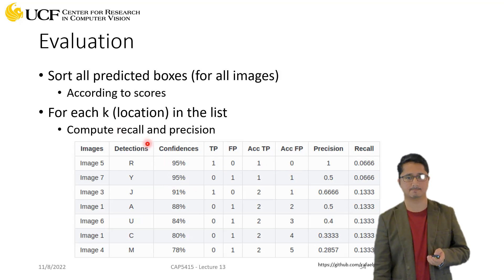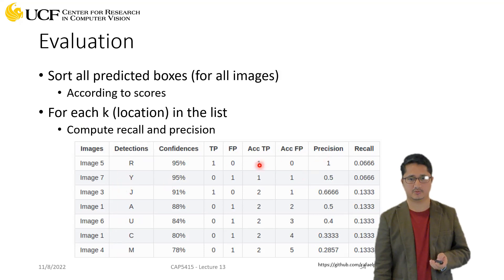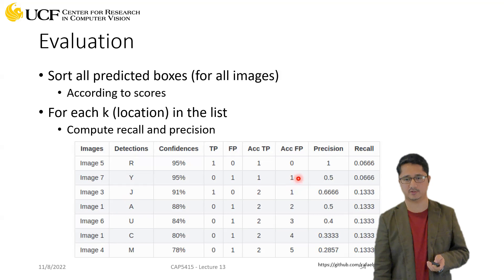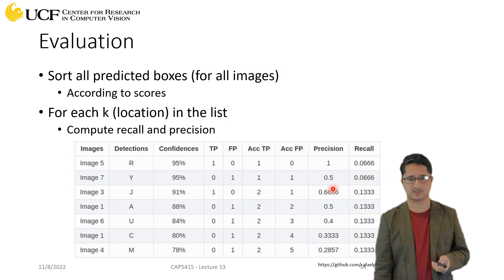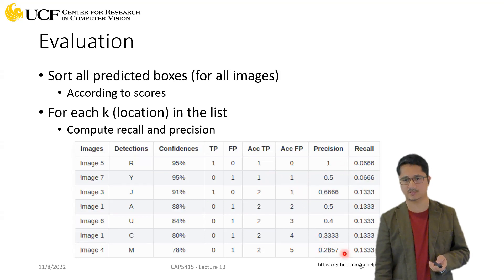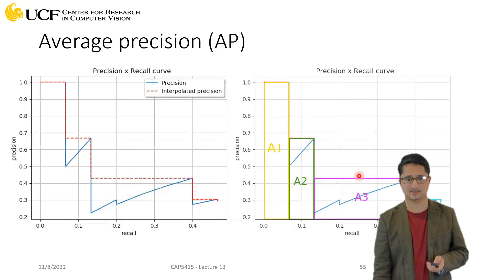You do this for all positions as you move down the sorted list. The second detection was a false positive, so true positives remain the same, false positives become one — making precision drop to 0.5. You keep computing precision and recall for the accumulated true positives and false positives. These numbers are used to compute the mean average precision score.